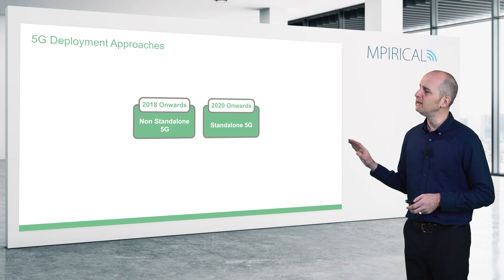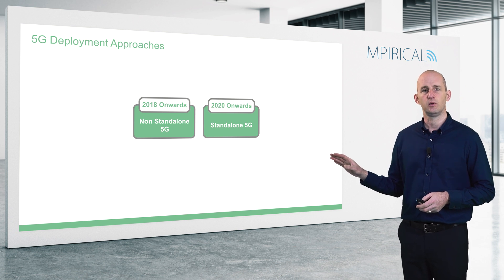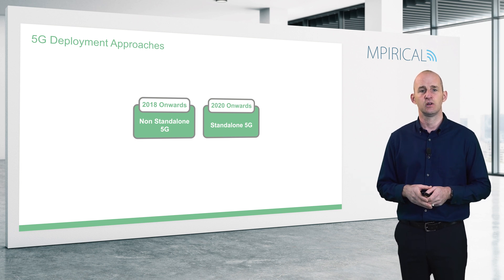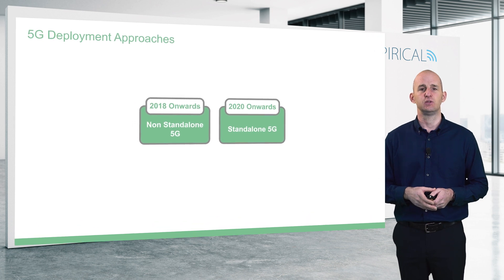To really fulfill the goals of 5G — to deliver ultra-reliable and low-latency communication and also support massive machine-type communication — we really need a standalone 5G deployment, which includes the deployment of the full end-to-end 5G network. That started to happen back in 2020.